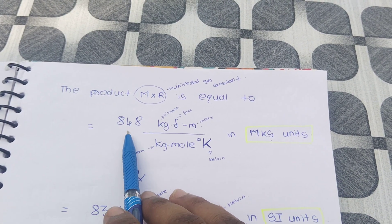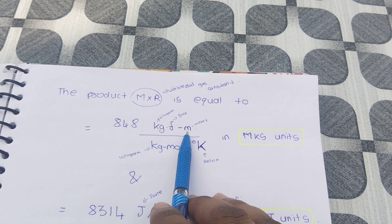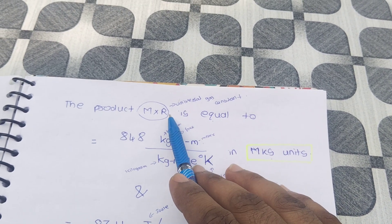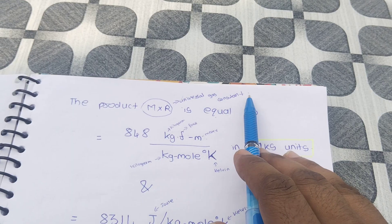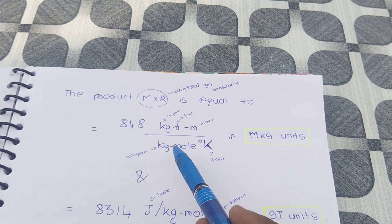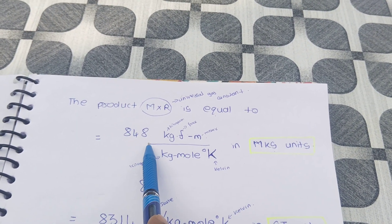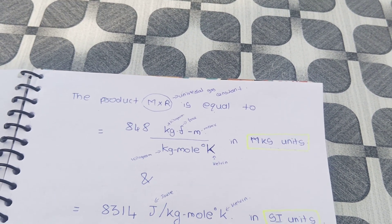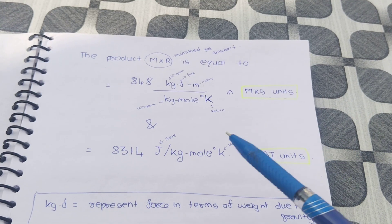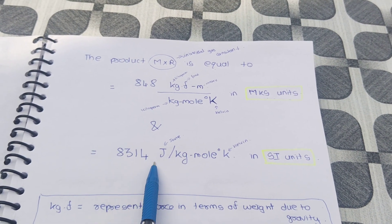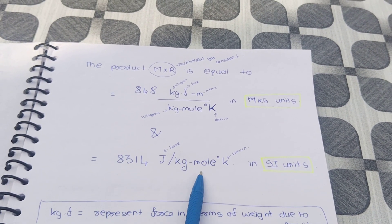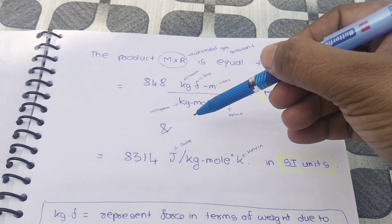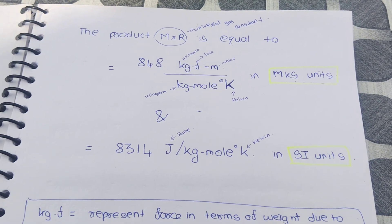The product M into R is equal to 848 kilogram-force meter per kilogram-mole degree Kelvin in MKS units. So the universal gas constant equals 848 kgf·m / (kg-mol·K) in MKS units, and 8314 Joules per kilogram-mole degree Kelvin in SI units. This is the main and important value to remember in numerical problems.